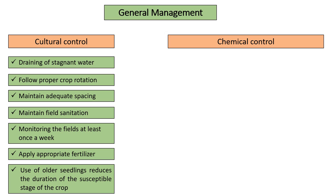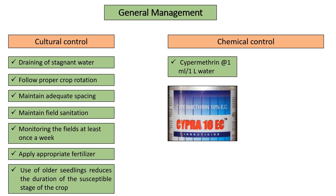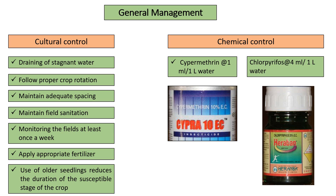It can also be chemically controlled by using cypermethrin at 1 ml per liter of water and chlorpyrifos at 4 ml per liter of water. However, chemical control should only be used in severe cases or as a last resort.